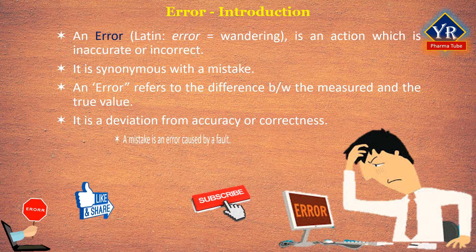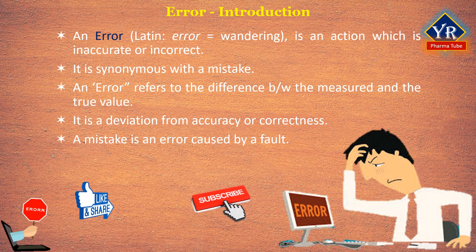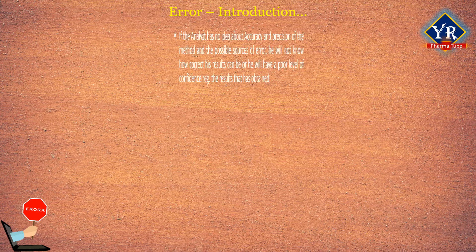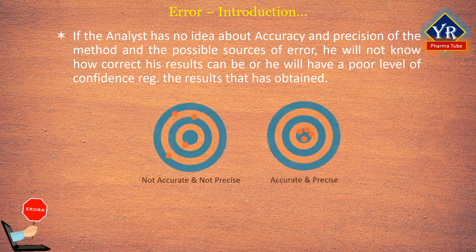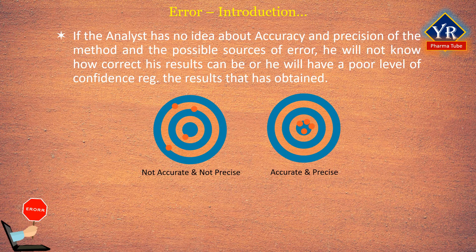A mistake is an error caused by a fault — the fault being misjudgment, carelessness, or forgetfulness. Therefore, the aim of an analyst is to obtain a result as near to the true value as possible. If the analyst has no idea about the accuracy and precision of the method and the possible sources of error, he will not know how correct his results can be, or he will have a poor level of confidence regarding the results obtained.